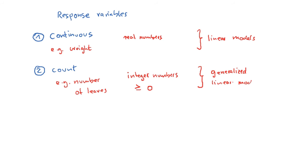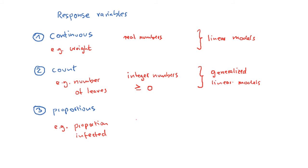Whenever your software allows you to choose among different modeling types, you should click on generalized linear models. Now the third type is a bit more tricky — these are the so-called proportions. A proportion is bounded between zero and one. For example, the proportion of infected individuals in a population. These are bounded within the interval zero to one, and whenever we have proportion data we also analyze them using generalized linear models.